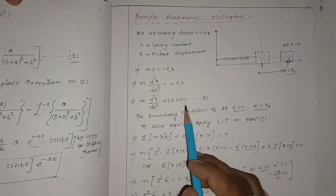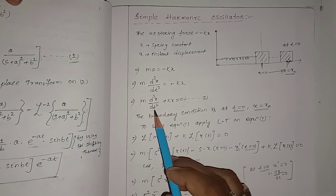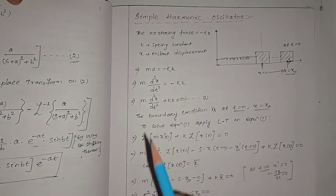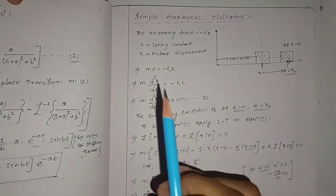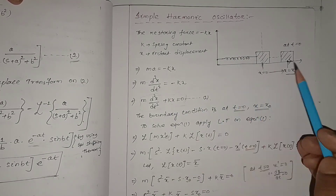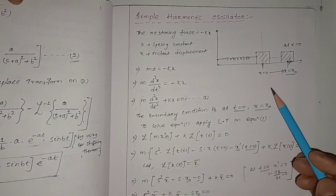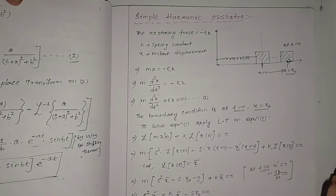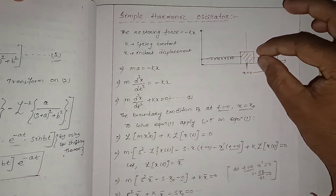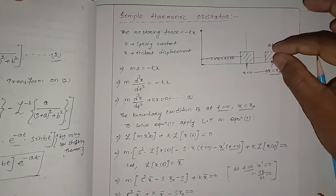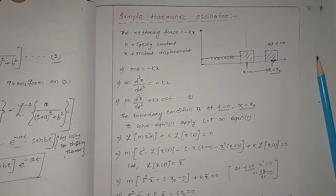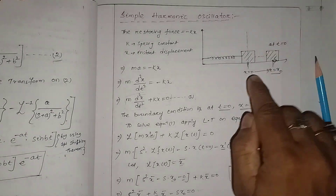So we can write m(d²x/dt²) + kx = 0. This is the standard second-order differential equation of a simple harmonic oscillator oscillating along the x-axis about its mean position. Initially, I dragged this body up to a certain position, so at t = 0 the oscillation starts from there.